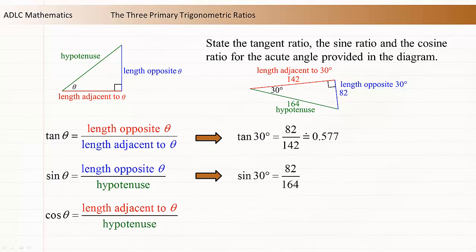The sine ratio is equal to the length opposite the 30-degree angle divided by the length of the hypotenuse. So the sine of 30 degrees is equal to 82 divided by 164, which is equal to 0.5.